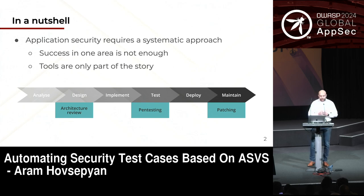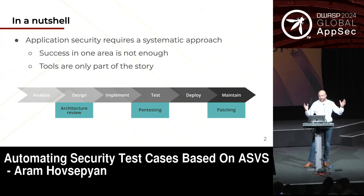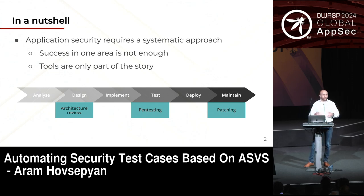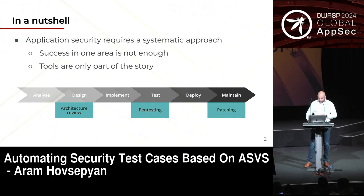In a nutshell, application security requires a systematic approach. You cannot get away with just having some patching, some pen testing, and in the best case an architectural review. And if you think AI and tools are going to solve it magically, they are not — they could even become part of the problem rather than the solution, although if you're doing things right, they're obviously part of the solution.